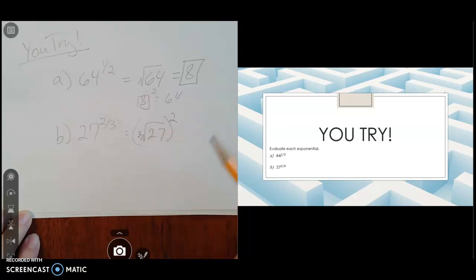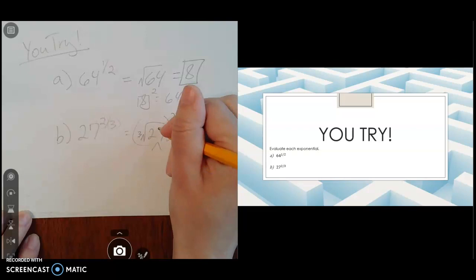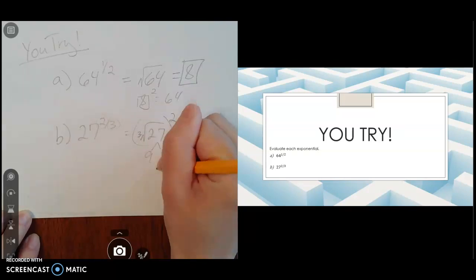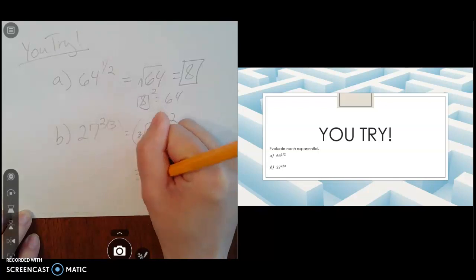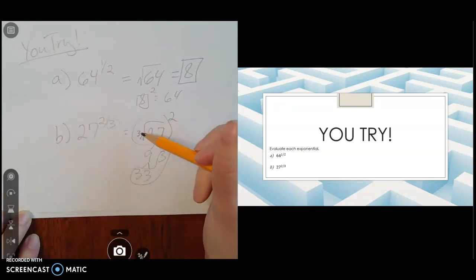So I'm going to do the cube root first. You may know that 3 to the third is 27, but if not, you can always break it apart. 27 would be 9 times 3, and 9 is 3 times 3. So we've got a nice little group of three 3's there, and you're looking for groups of 3 to come out of a cube root.